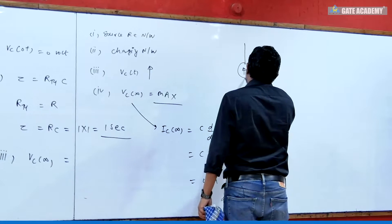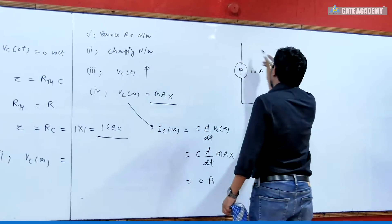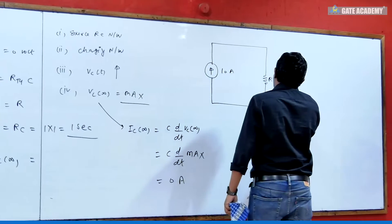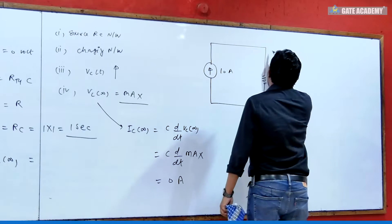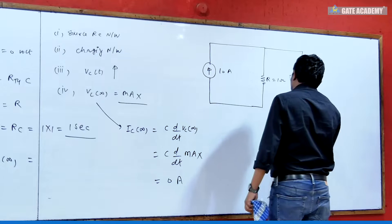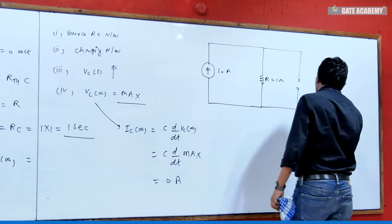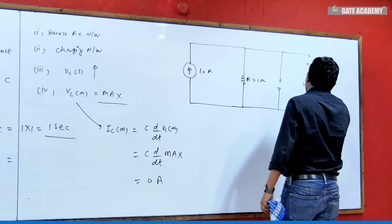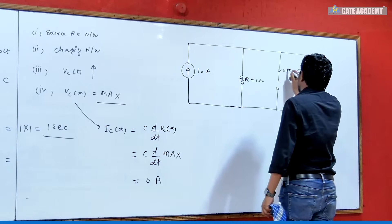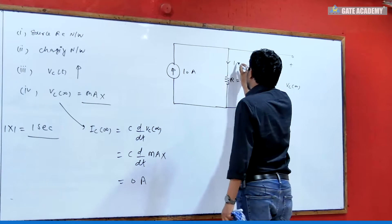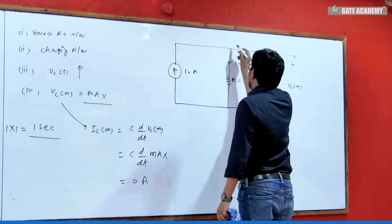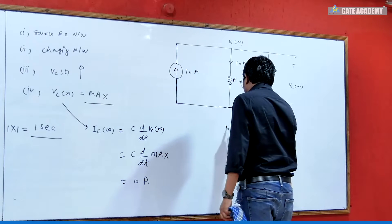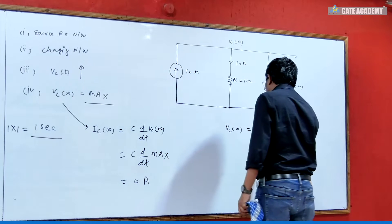The source is 10A. R is 1 Ohm. In steady state, capacitor is open circuit, so capacitor current is 0. Therefore, Vc(∞) = 10A × 1 Ohm = 10V. The Vc(∞) value is 10 Volts.